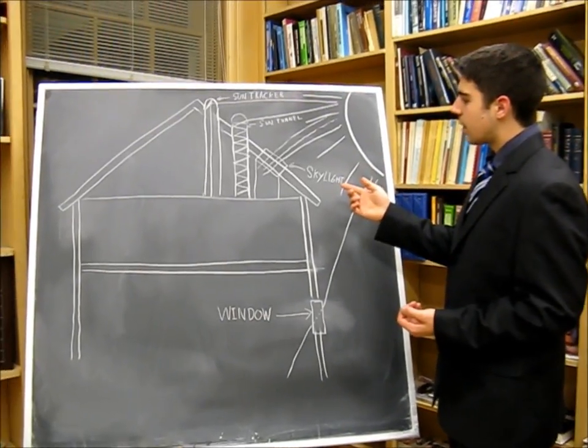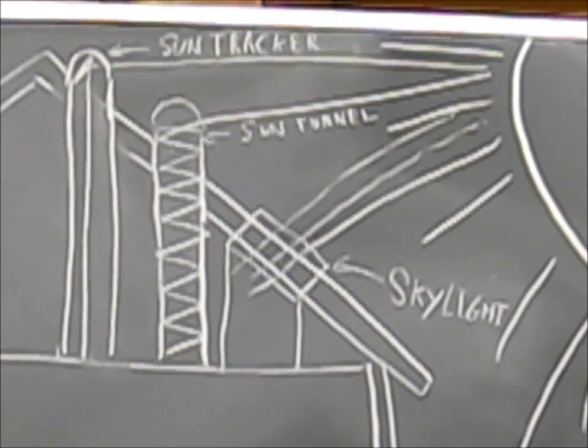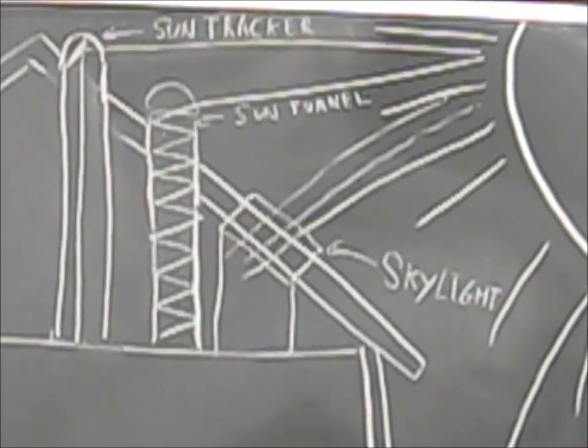A skylight can be thought of as a window, except it's on the roof. Also, not all rooms can incorporate windows or skylights.